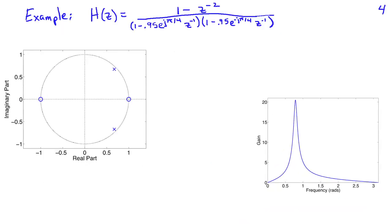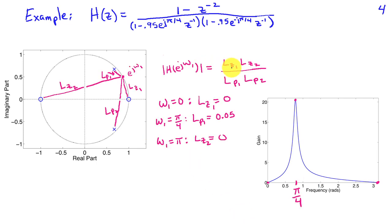Here's a second example with a second-order system. I have two zeros — one at z equals +1 and the other at z equals −1 — and two poles placed very close to the unit circle at 0.95 e^{jπ/4}. The frequency response magnitude will be the product of distances L_z1 and L_z2 to the zeros for a point on the unit circle at a given frequency ω₁, divided by the product of distances L_p1 and L_p2 to each of the poles. As we vary ω₁ around the unit circle, all these distances change and the frequency response magnitude changes accordingly.